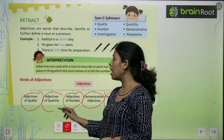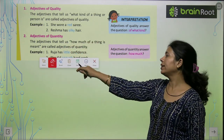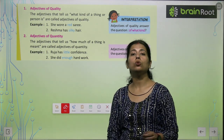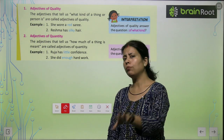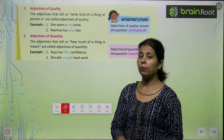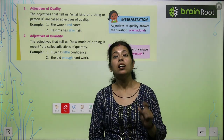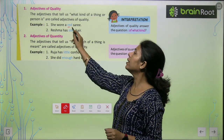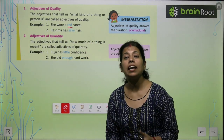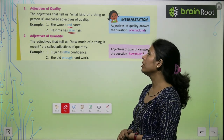सबसे पहले आ जाते हैं adjective of quality पर। The adjective of quality — जब हम किसी की कुछ विशेषता, उसके बारे में कुछ बता रहे हैं, चाहे अच्छा, बुरा, कुछ ना कुछ quality है। She wore a red sari — साड़ी कैसी? Red. The particular word 'red' is adjective of quality. Reshma has silky hair. कैसे hair हैं? Silky। तो hair की quality है silky — so silky is adjective of quality।